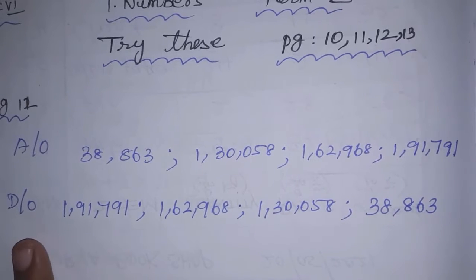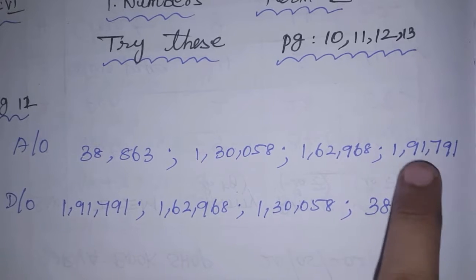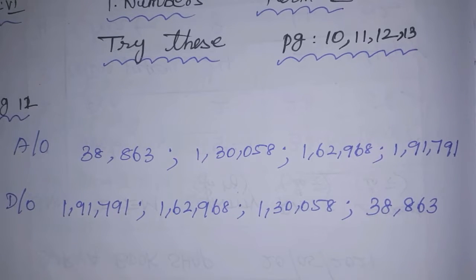The descending order is big to small. So the descending order will be: 1,91,791; 1,62,968; 1,30,058; 38,863.